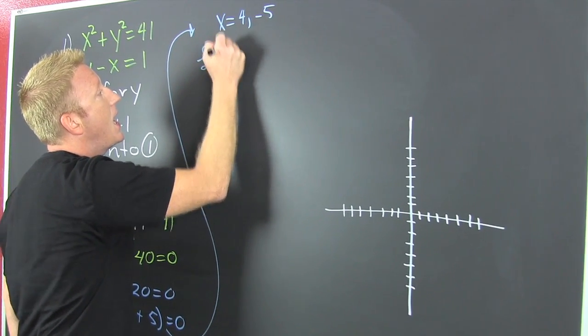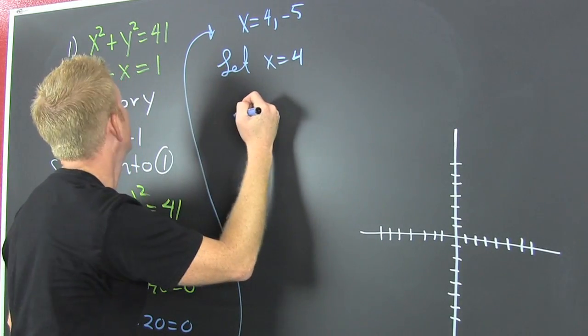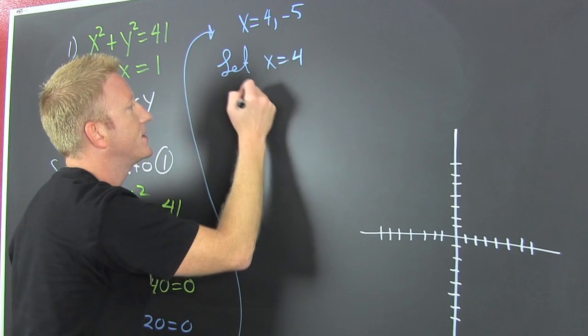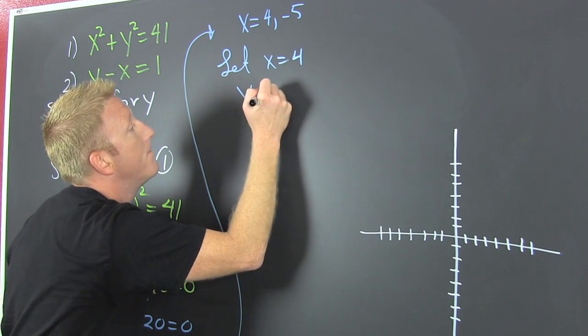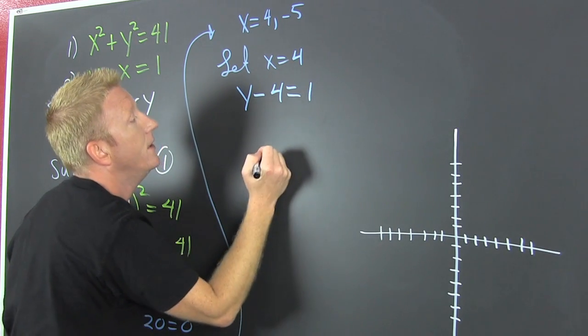I'm going to let x equal 4. And I'm going to plug it back up into the original. Which one? Probably 2. It's nicer. So then I have y minus 4 is equal to 1.